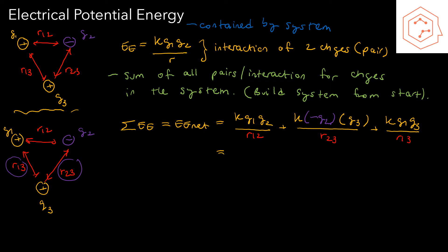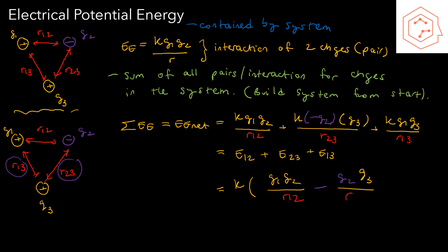Often in these problems you'll have symmetry within the geometry or the charges — maybe q1, q2, and q3 are all the same magnitude, or the distances r12, r13, and r23 are all equal — so you can simplify further, as we'll see in an example.